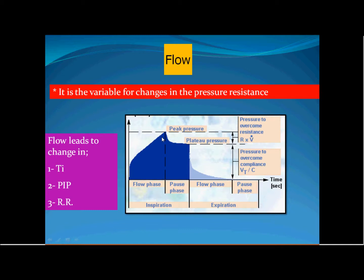When you look at the pressure-time curve for volume control, the peak inspiratory pressure is the summation of the pressure resistance and the plateau pressure. The pressure resistance is the difference between peak inspiratory pressure and plateau pressure. This pressure resistance is important because it equals the flow multiplied by the resistance.